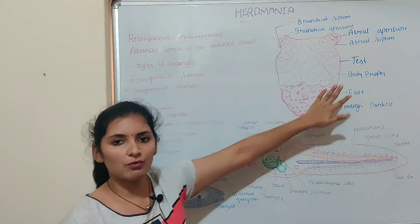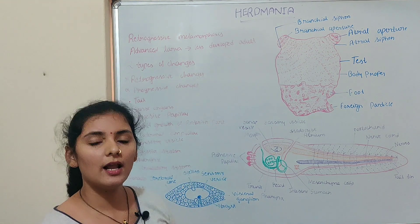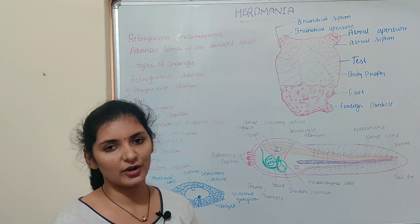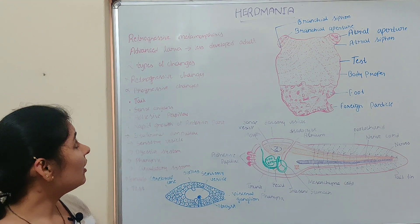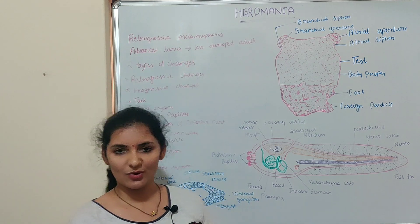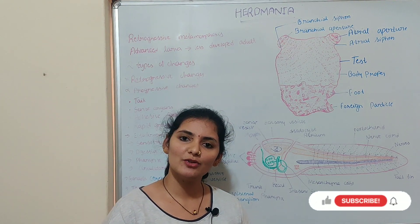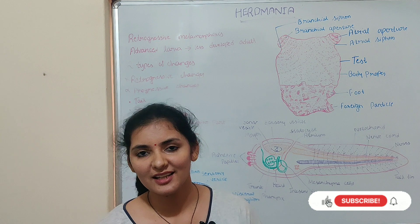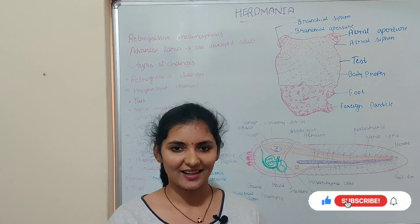Because of these retrogressive and progressive changes, a sessile, degenerate, inactive adult form is produced. This adult individual lacks almost all chordate characters. That is all about retrogressive metamorphosis. I hope this video is useful. If you like this video, please hit the like button and subscribe to my channel. Thank you.